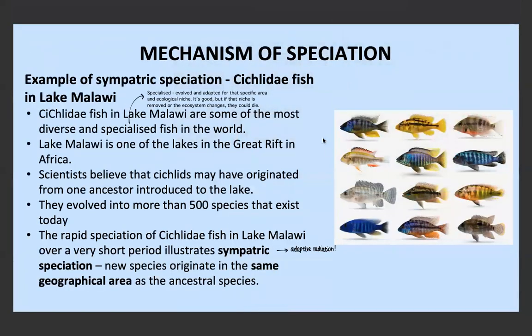One of the main examples of sympatric speciation is the cichlid fish. This is quite often asked in papers and exams. In Lake Malawi there are fish called cichlids, and they are of multiple different species that became this way through sympatric speciation. They're some of the most diverse and specialized fish in the world — very well adapted for their specific area and ecological niche. This is obviously very advantageous in their current environment, but if that niche were removed or the ecosystem changed, they might not be able to adapt fast enough because they're so specialized and genetically similar, and they may then become extinct.